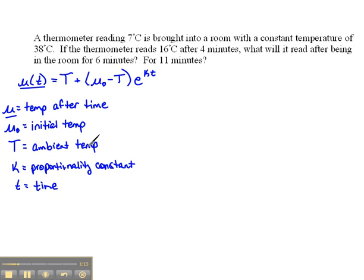Capital T is the ambient temperature. This ambient means in the surrounding medium, so if you're bringing something into a room, that would be the temperature of the room. If you're taking a pizza out of the oven, you're going from the oven into the room, so the ambient temperature would be the room's temperature. K is our proportionality constant, and t is our time.